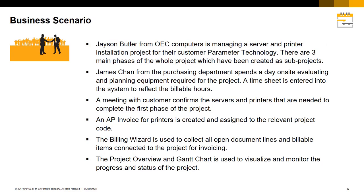Here is an example business case scenario. Jason Butler from OEC Computers is managing a server and printer installation project for their customer Parameter Technology. There are three main phases of the whole project which have been created as sub-projects. James Chan from the Purchasing Department spends a day onsite evaluating and planning equipment required for the project. A timesheet is entered into the system to reflect his billable hours. A meeting with the customer confirms the servers and printers needed to complete the first phase of the project. An AP invoice with printers is created and assigned to the relevant project code. The Billing Wizard is then used to collect all open document lines and billable items connected to the project for invoicing. The Project Overview and Gantt chart is then used to visualise and monitor the progress and status of the project.